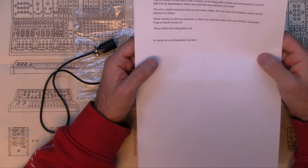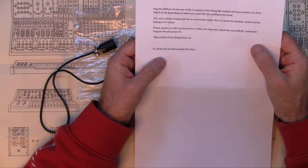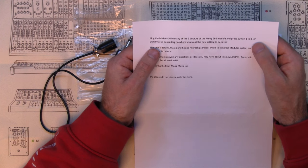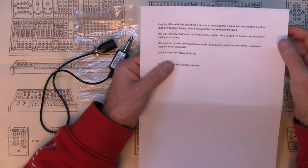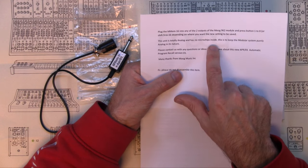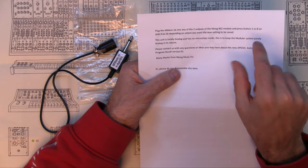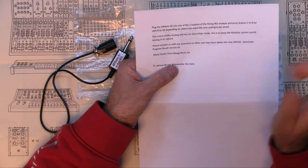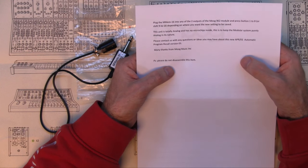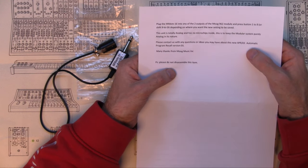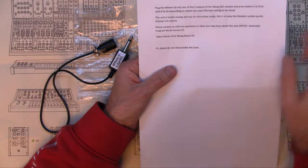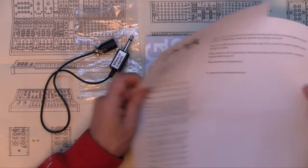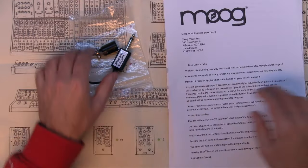Saving instructions. Plus the MM16 into any of the two outputs of the Moog 962 module. I hope I've got that on mine. This unit is totally analog and has no microchips inside. This is to keep the modular system purely analog in its nature. If anyone can do that, Moog can do that. Please do not disassemble this item. Well, it's a bit silly putting that at the end of the letter. They should have put that at the beginning and I wouldn't have opened it all. Anyway, I'm sure they're not going to be too upset with it.